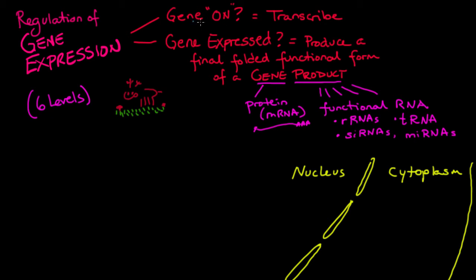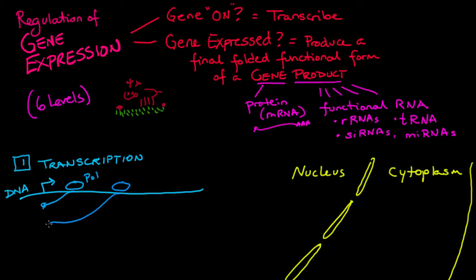And the first one is turning the gene on. So the first level of gene expression regulation is transcription. And transcription starts on the DNA. And here's a gene transcription start site. And along comes RNA polymerase. And RNA polymerase is transcribing this RNA molecule. And here's another RNA polymerase. It's gotten a little bit further along.